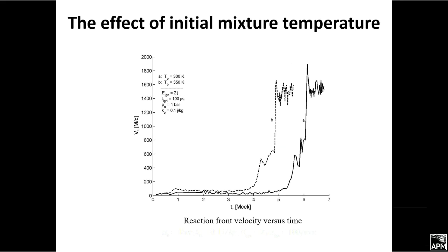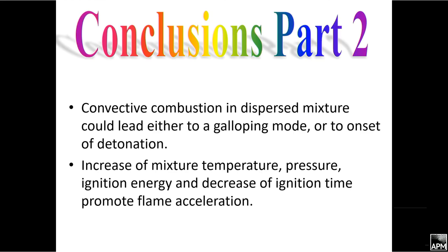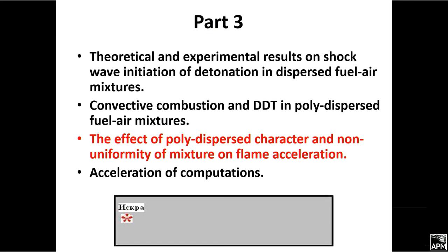The effect of initial mixture temperature: the increase of temperature of mixture also brings to the decrease of pre-detonation time. Conclusions to this part: convective combustion in dispersed mixture could lead either to a galloping mode of combustion or to onset of detonation. Increase of mixture temperature, pressure, ignition energy, and decrease of ignition time promote flame acceleration. Next, the effect of polydispersed character and non-uniformity of mixture on flame acceleration.